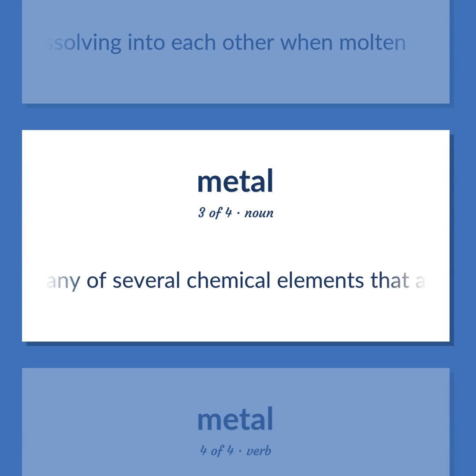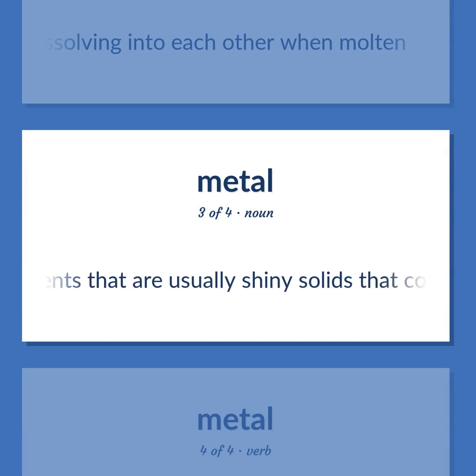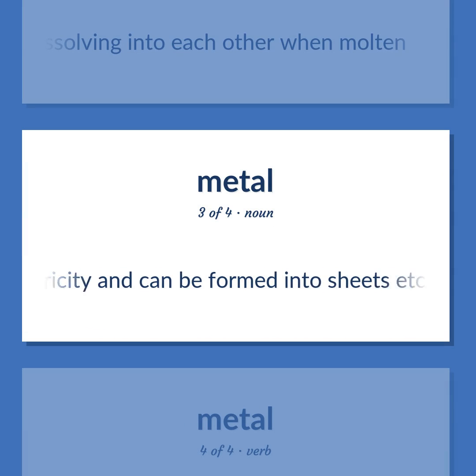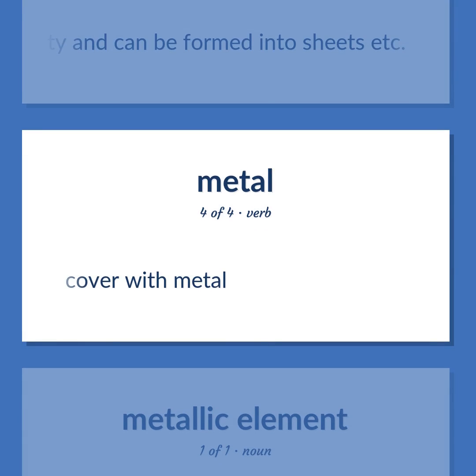Metal: Any of several chemical elements that are usually shiny solids, that conduct heat or electricity, and can be formed into sheets, etc. Also: to cover with metal.